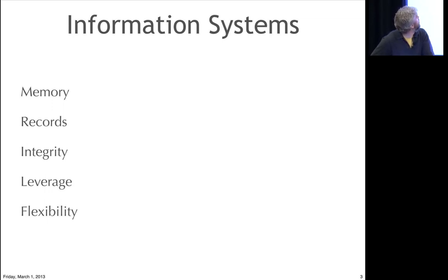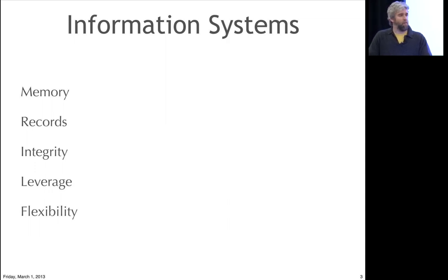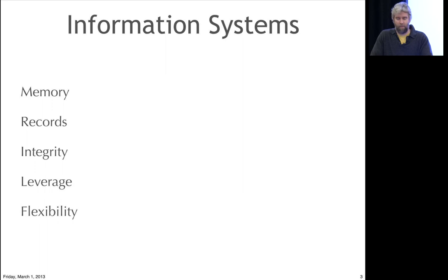Information systems need to remember things. The word memory that I use here is not like computer memory — this is memory in the human sense, where when you make a new memory, you don't forget your old memories. That's how we want information systems to work. We want to be able to remember things and think about them.